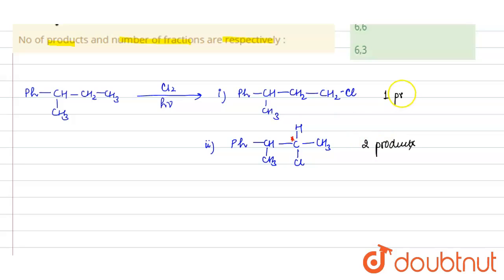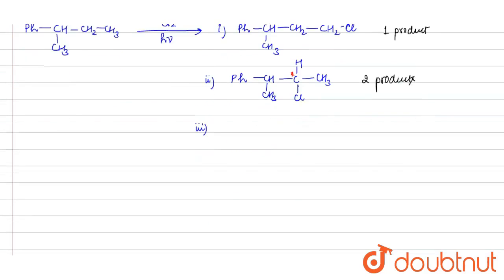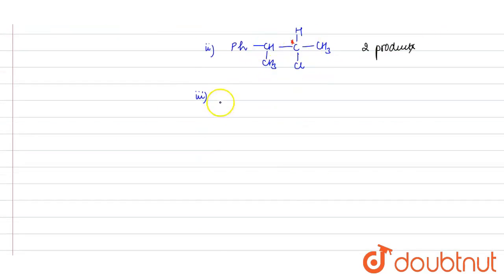And here one product. Now next possibility is Cl can attack - Ph with Cl groups and CH₃. Here also this carbon is your chiral carbon.